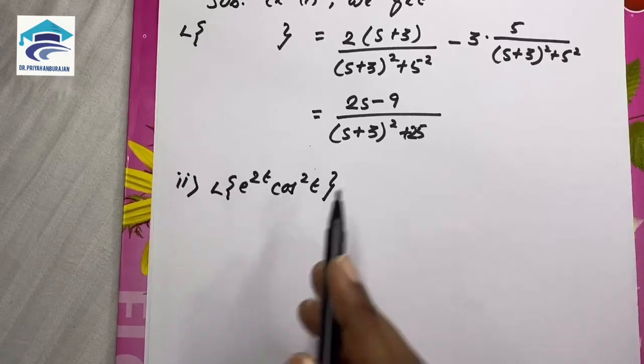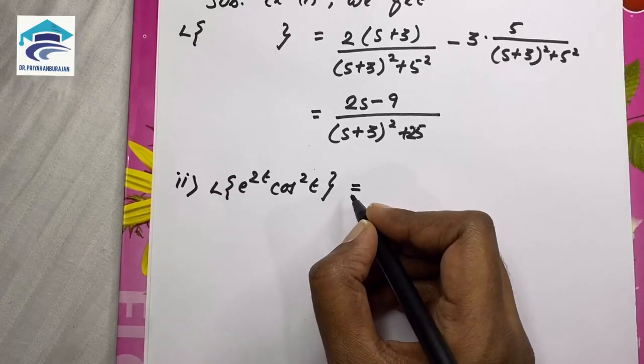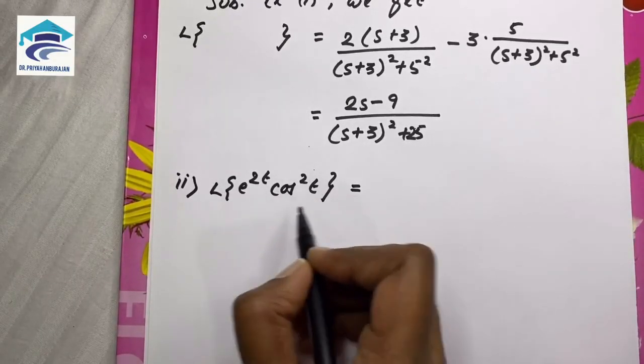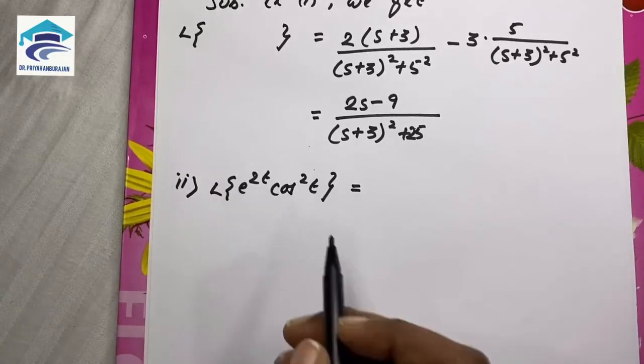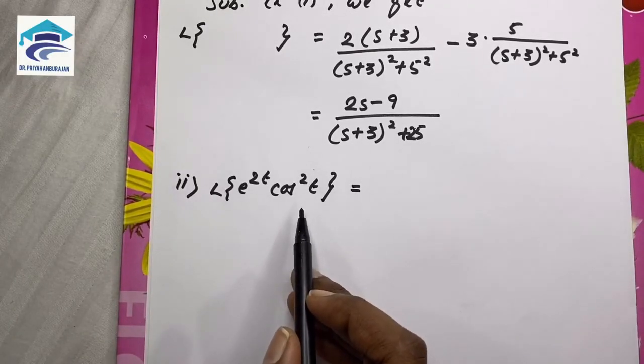What we're going to do is write this cos squared in terms of cos. You can write cos squared theta as 1 plus cos 2 theta by 2. Here it is cos squared t, so 1 plus cos 2t by 2.